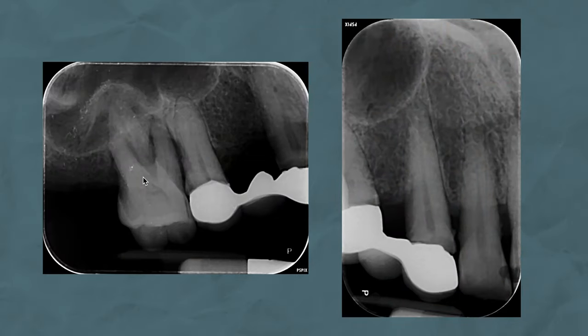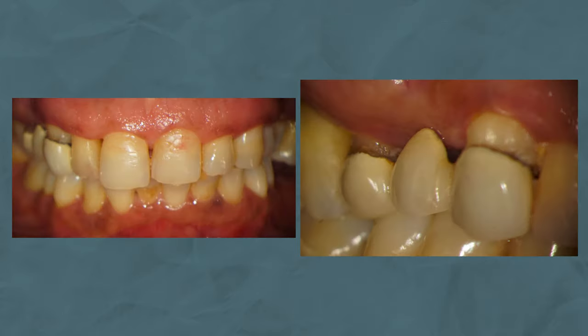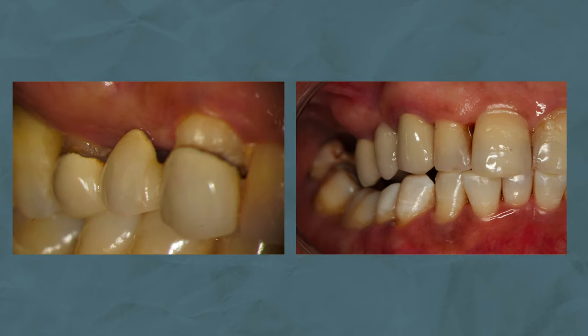A fixed-fixed design is generally not the best option unless you're replacing an existing fixed-fixed bridge or the adjacent teeth need cuspal coverage. You should not use root-treated teeth as abutments. This is an example of a failing fixed-fixed bridge with marginal defects and secondary caries replacing the upper right first premolar, where the upper right molar needed to be extracted. The pre-op clinical photos show the marginal breakdown, and you can also see a modified ridge lap design for the pontic. The post-op shows the margins re-prepped and a new bridge made.